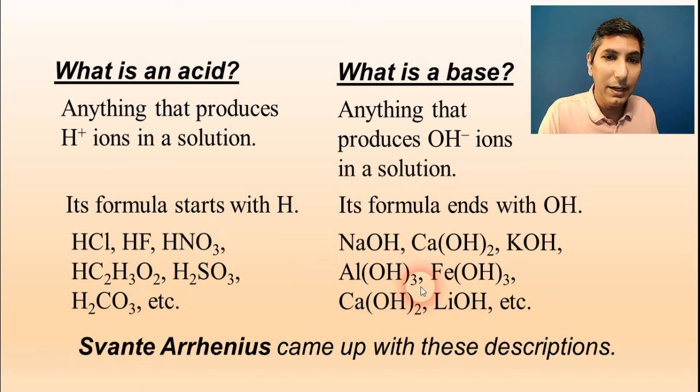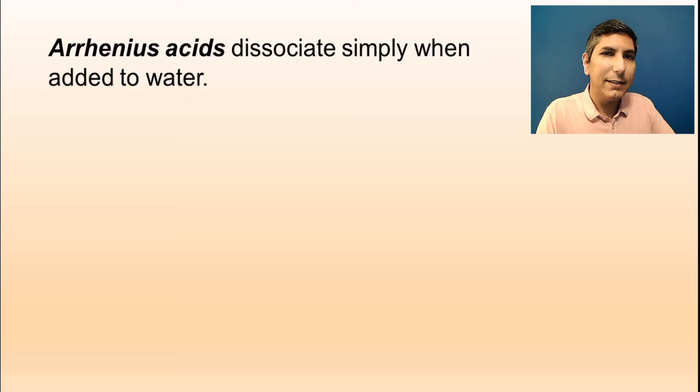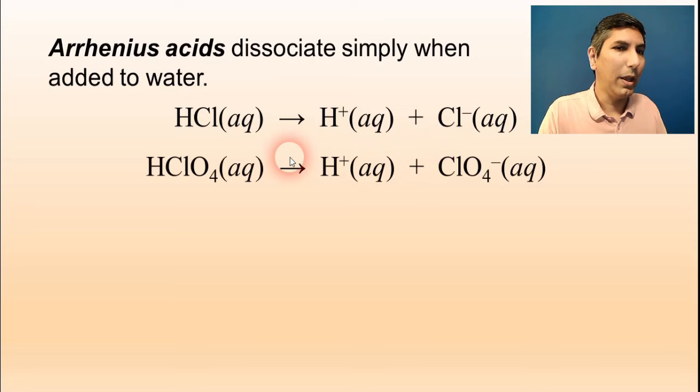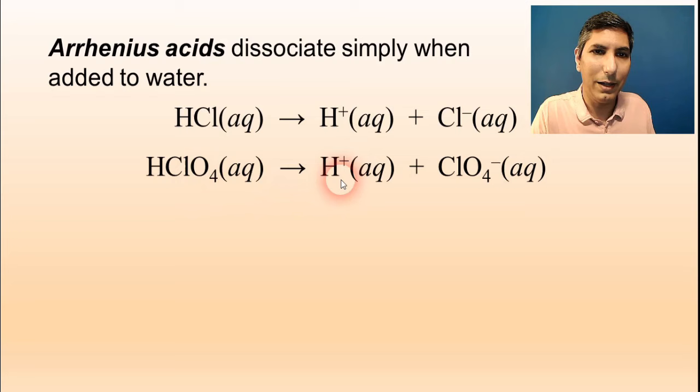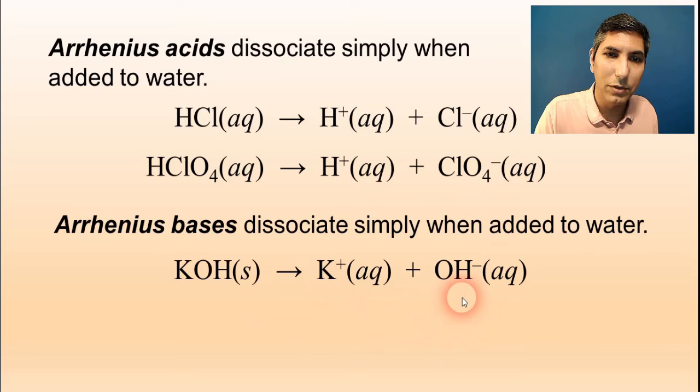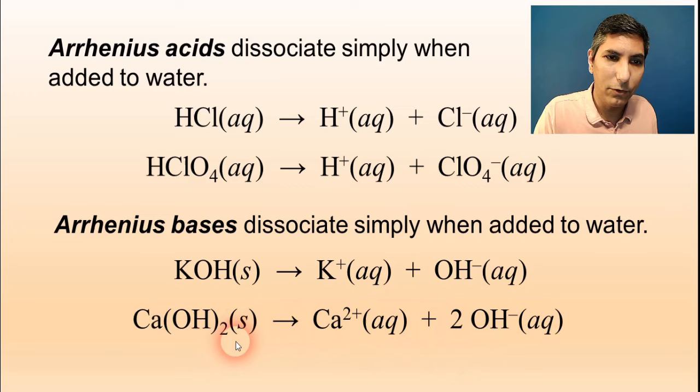Usually, when we look at Arrhenius acids, they're going to dissociate very simply when you add them to water. So you take HCl, and it just dissociates. It breaks apart into its component ions. We could say the same thing for perchloric acid. It's going to break apart as well, just into its component ions, H plus and perchlorate. Arrhenius bases, they do the same thing. They just break apart into their component ions. So there we have potassium hydroxide producing those two ions, and calcium hydroxide producing its two ions. Now, in this case, we have two hydroxides, so that's why there's a two right there.